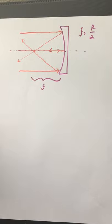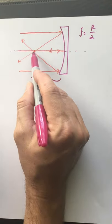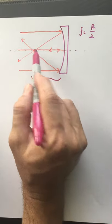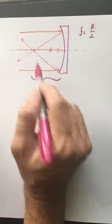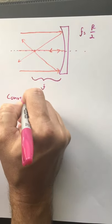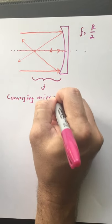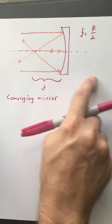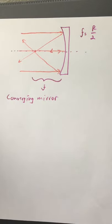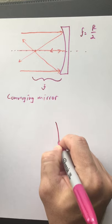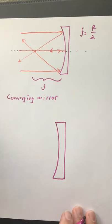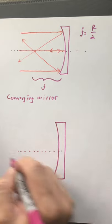So we have the focal length — notice that these things converge to a point. I'm making the approximation that there's a focal point, not a focal region. I have a focal length from the surface of the mirror to the focal point, and these rays are all converging on that point, so we call this a converging mirror. We have seen cases of converging lenses, and these actually work pretty much the same, with the exception that the light is not passing through the mirror like it does in a lens — it's bouncing off of the mirror.